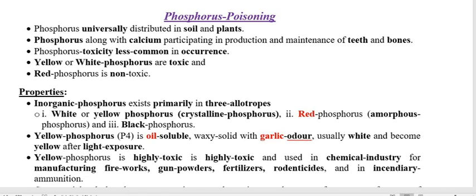Regarding Phosphorus, it is universally distributed in soil as well as in plants. Phosphorus, along with calcium, both are participating in the production and maintenance of teeth and bones.